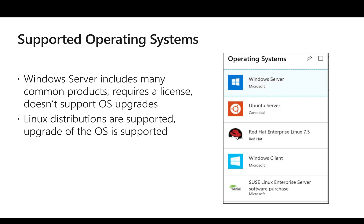The next thing to be aware of is operating system support. We have both Windows and Linux distributions. Windows Server normally comes with different common product installations and normally requires a license. One important note: if you want to upgrade the OS, it is not currently possible with Azure VMs — so if you chose Windows Server 2012 and are trying to upgrade it to Windows Server 2016, you would need to recreate a new VM with the latest OS.